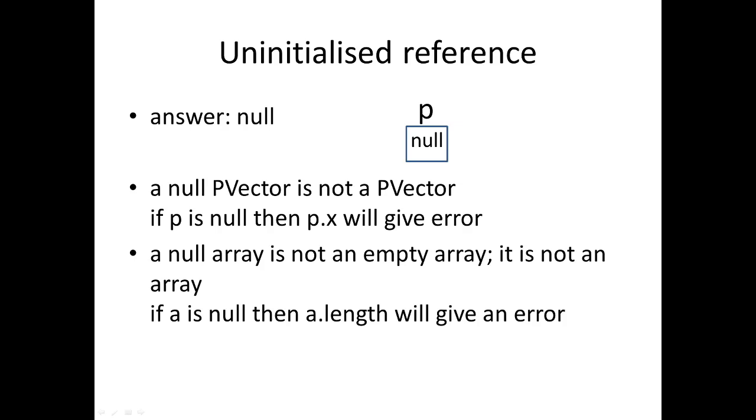Likewise, if you've got a null array, then you can't do anything with that either. If you want to say, well how long is that null array? Well, it's not an empty array - it's just not an array. It's an absence of an array. So when we say if a is null - a is an array of type array and it's null - then a.length we can't do that. We can't say it's got zero length, because a is null. It's not an array yet, and so a.length will give us an error.